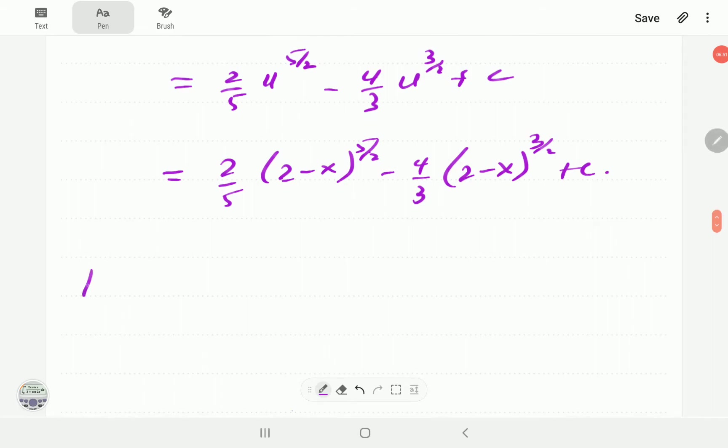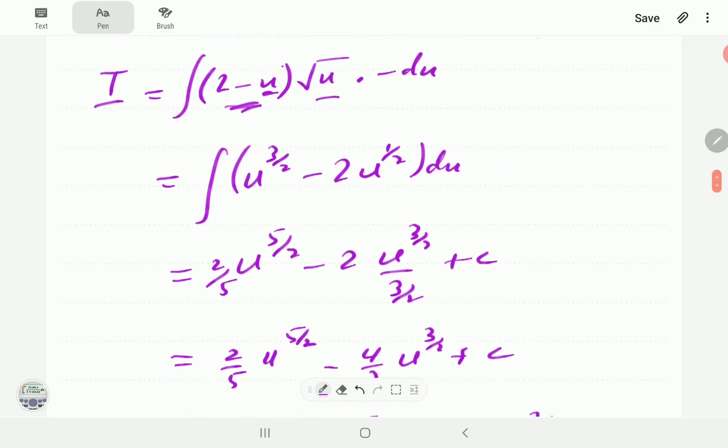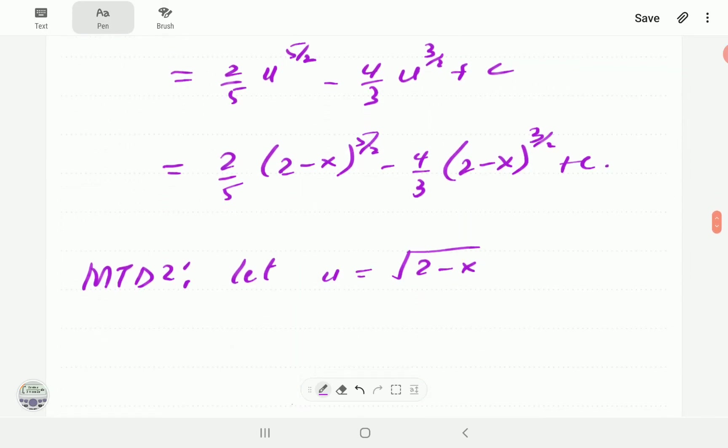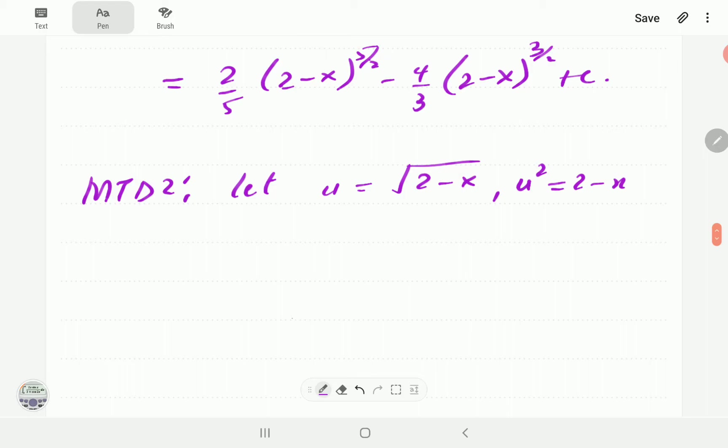In the second approach, we actually let u be the whole term involving the square root. Before, u was just 2-x. This time we include the square root. So here we start by squaring both sides. So u² is 2-x. So x, which we are going to need, is 2-u².